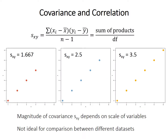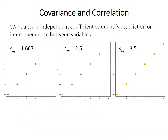However, there's one downside with covariance: its magnitude depends on the scale of the variables, so it's not ideal for comparisons between different data sets. For example, these three data sets all define a perfect linear trend — as x increases by one, y also increases by one. Yet the covariance of the left panel is 1.667, the middle panel is 2.5, and the right is 3.5, even though they're all perfect lines. What we really want is a scale-independent measure to quantify this association.